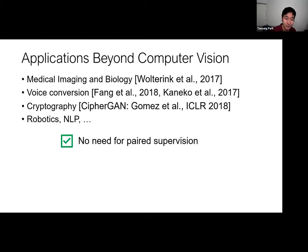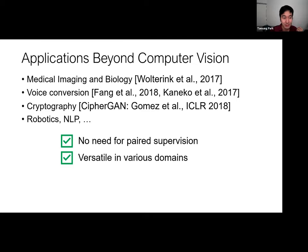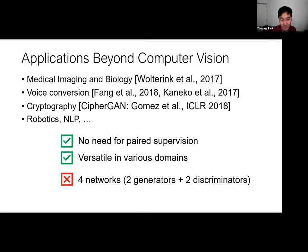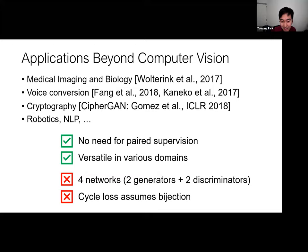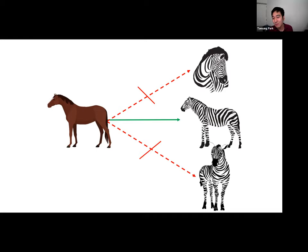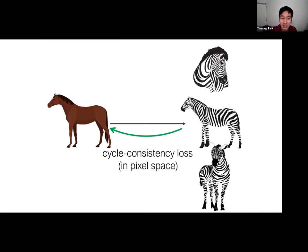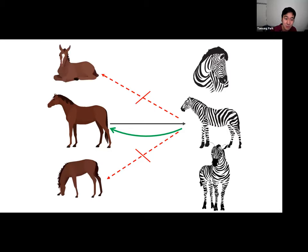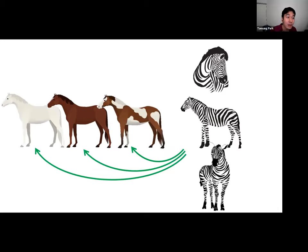CycleGAN had the advantage of not requiring paired supervision with a loss function generalizable to other domains, but it's not perfect. Four networks need to be trained, making it computationally heavy. Also, the cycle consistency loss is sometimes too constraining. Cycle loss promotes sensible translation — the translated zebra should retain some resemblance to the horse. However, there are many plausible horses that may correspond to the same zebra. Once the horse is transformed to a zebra, the color information is lost, so the back-translated horse's color shouldn't really matter — a head should remain a head and feet should remain feet.